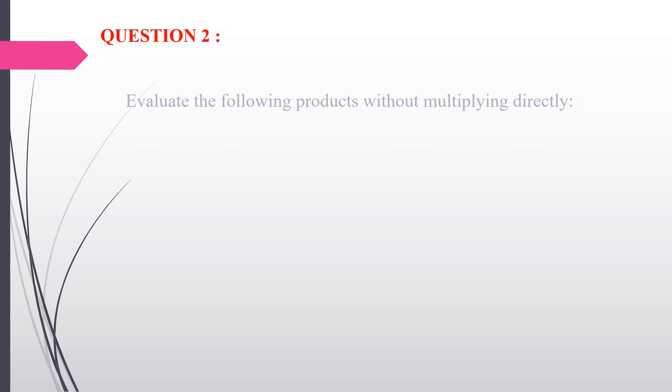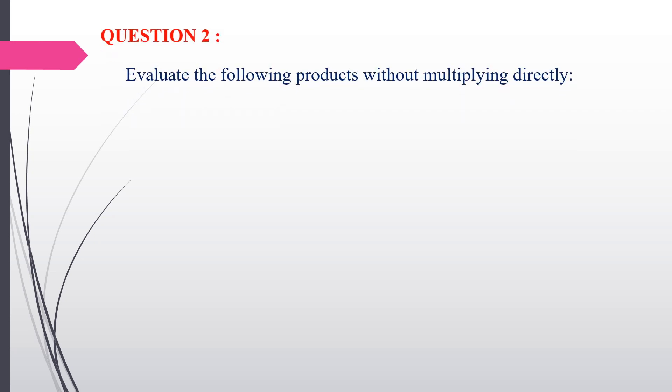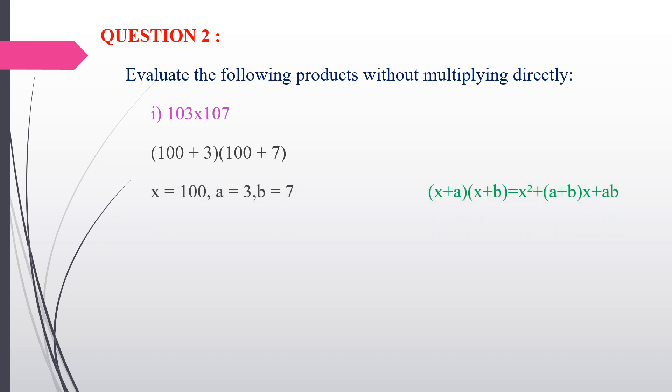Second question: evaluate the following products without multiplying directly. First subdivision: 103 × 107. We split this as (100 + 3)(100 + 7) and use the identity (x + a)(x + b) = x² + (a + b)x + ab, where x = 100, a = 3, b = 7. Applying: 100² + (3 + 7) × 100 + 3 × 7.